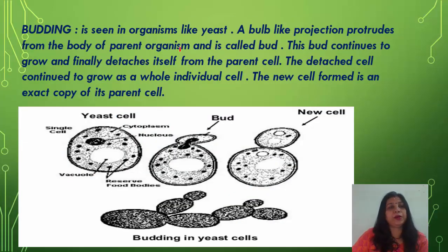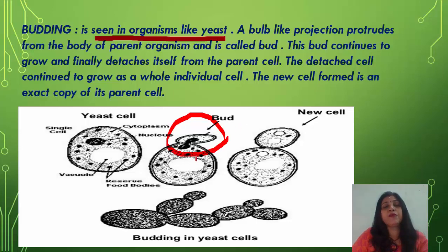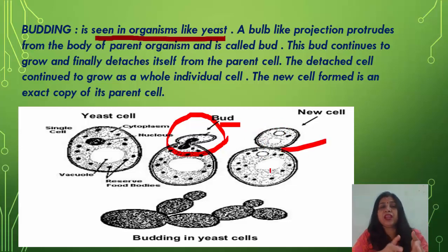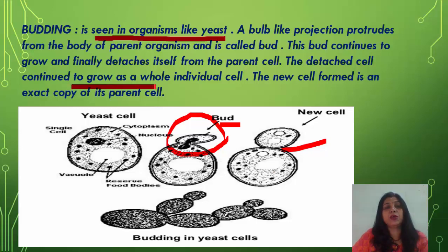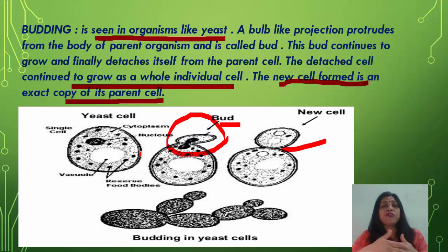Budding is seen in organisms like yeast. A bud is a bulb-like projection that protrudes from the body of the parent organism. This bud continues to grow and finally detaches itself — it separates from the parent cell. The detached cell continues to grow as a whole individual. The new cell formed is an exact copy of the parent cell, because in asexual reproduction a single parent is involved.